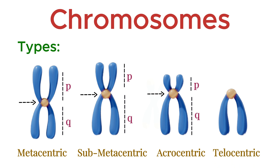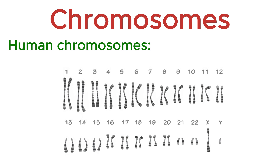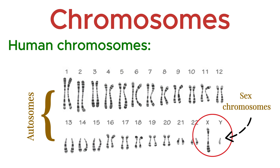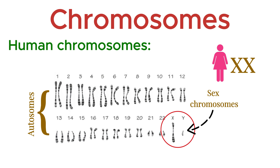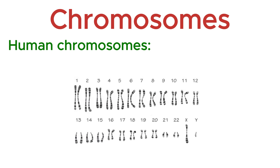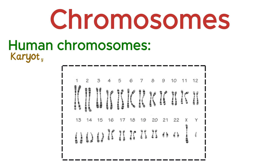And finally, the telocentric chromosome. The centromere is positioned at the very end of the chromosome, so it appears to have only one arm. It's important to note that telocentric chromosomes are not found in humans, but they are present in some animal species like mice. Speaking of humans, humans have 23 pairs of chromosomes. 22 pairs are autosomes — they carry genes for general body functions. The 23rd pair is the sex chromosomes, which determine the biological sex of an individual. In females, the sex chromosomes are XX, while in males they are XY. The visual arrangement that shows all the chromosomes of an individual is called a karyotype. It is used to identify chromosomal abnormalities, such as extra or missing chromosomes, or structural defects.